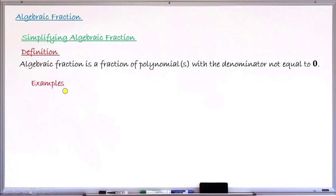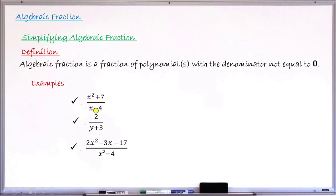Let's look at some examples of algebraic fractions. Example one: x squared plus 7 all over x minus 4 — both the numerator and denominator contain a polynomial, so it is an algebraic fraction. Number two: 2 over y plus 3 — only the denominator contains a letter, but it is still an algebraic fraction. Number three: 2x squared minus 3x minus 17 all over x squared minus 4 — letters appear in both numerator and denominator, so it is an algebraic fraction.